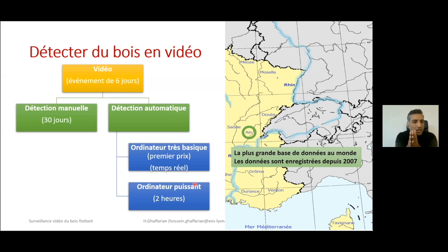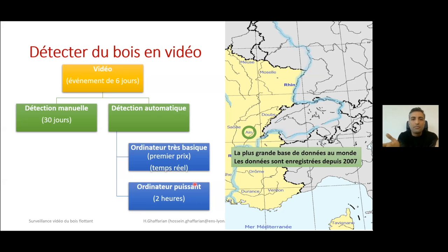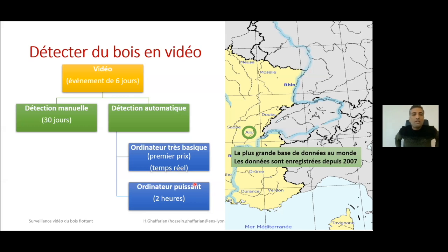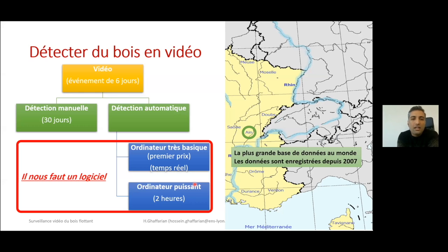For example, for a six-day flood event on the Ain river, it takes us one month or more to detect the wood manually — just sitting behind a computer detecting pieces of wood. But automatically, with a very standard computer, we can do it in real time, and with a powerful computer we can process all six days in maybe less than two hours.